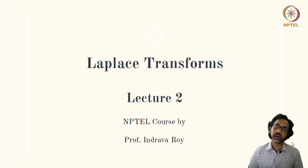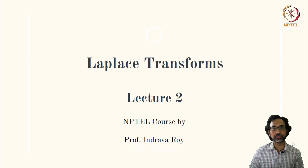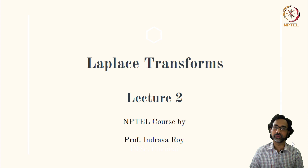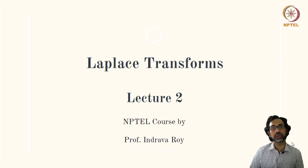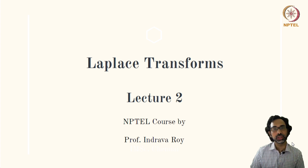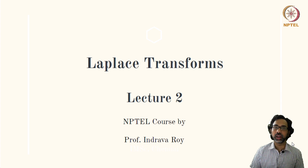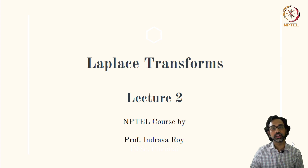In the last lecture, we saw the definition of the Laplace transform and we saw that it is a special case of an integral transform. We also saw that it is defined using the concept of an improper Riemann integral because the limits of integration for the Laplace transform is from 0 to infinity. So, the ordinary Riemann integral can no longer be defined and one uses a limit formula to define the so-called improper Riemann integral.